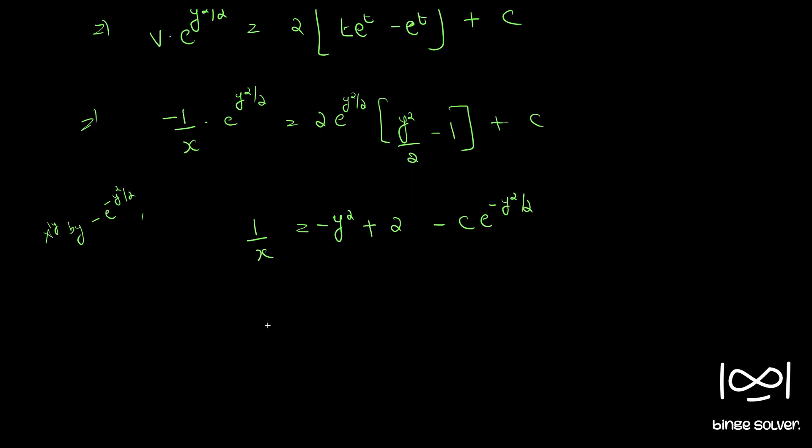This can also be written as 1 by x equal to 2 minus y square plus e1 e raise to minus y square by 2, where e1 equal to minus c, another arbitrary constant. So this is the final answer.